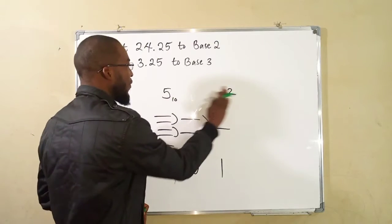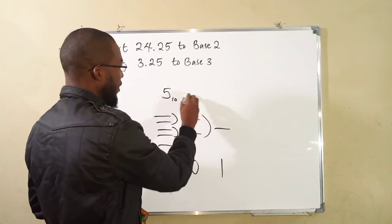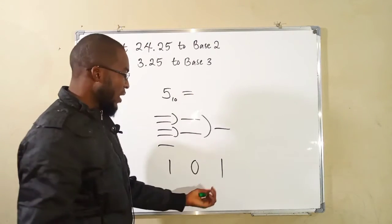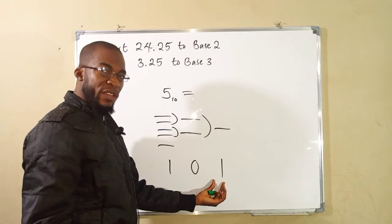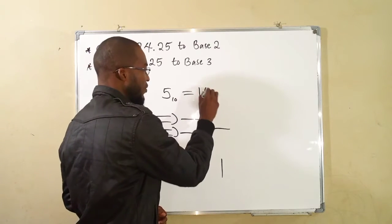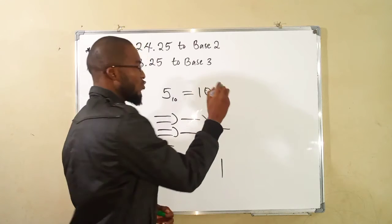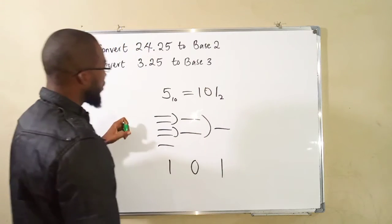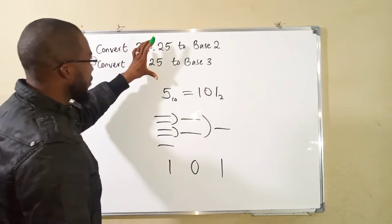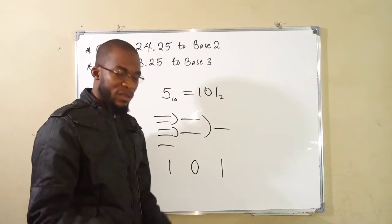This is to say, 5 in base 10, it is the same thing as you start taking these remainders from right to left. We have 1, 0, and 1 in base 2. So now let us see how we can convert these numbers to their corresponding assigned bases.